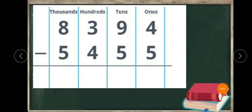Here is the example. Two numbers are given: eight thousand three hundred and ninety four, and five thousand four hundred and fifty five. We have to subtract five thousand four hundred and fifty five from eight thousand three hundred and ninety four. First, we have to arrange the digits in columns according to their place values.